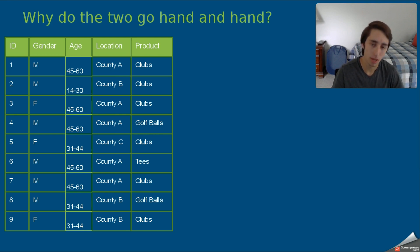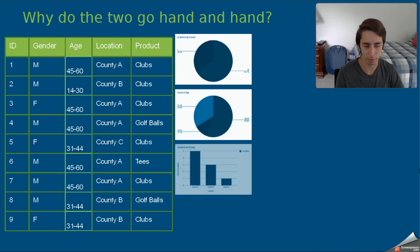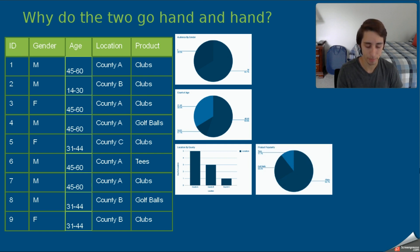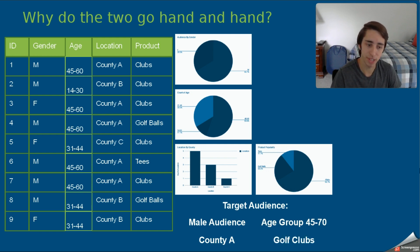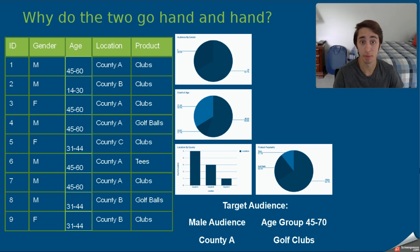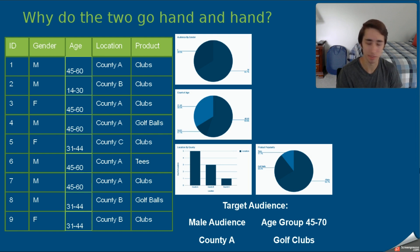In the real world you'll be dealing with thousands of rows and many columns, so visual trends become even harder to spot in raw tables. But look what happens when we plug the information into visual analytics — with the pie charts and bar charts coming up, we can immediately see obvious trends. Our target audience is mostly males, mostly aged 45 to 60, most respondents reside in County A, and a whopping two-thirds majority are interested in buying golf clubs. Right away we know to market golf clubs toward an older male audience in County A.